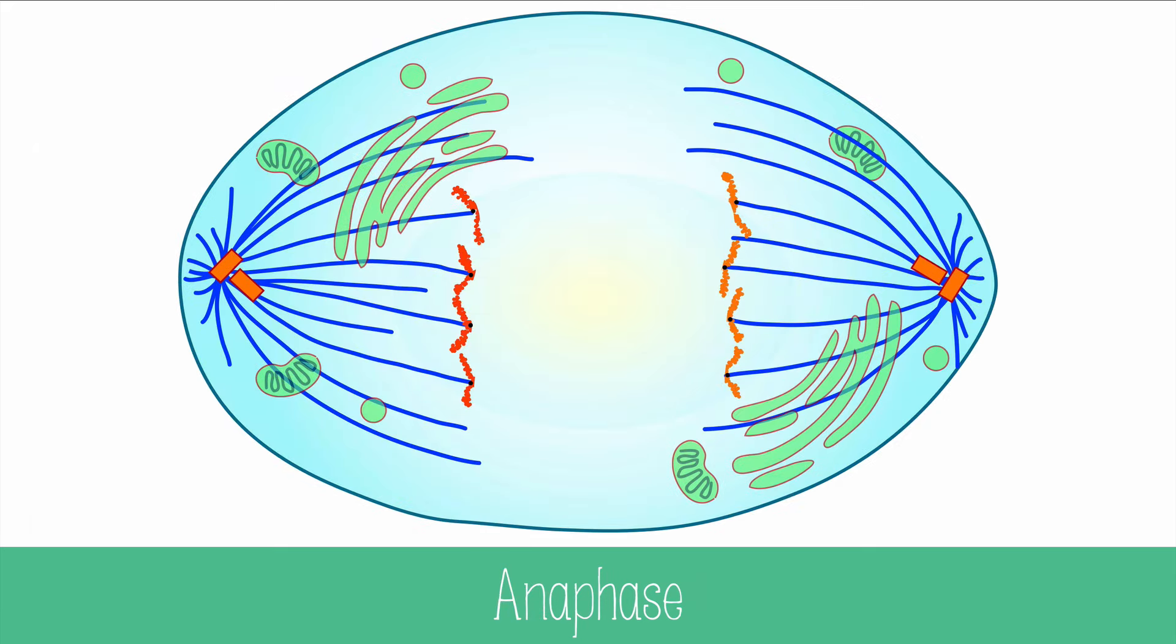In anaphase, chromatids of each chromosome separate at the centromere toward opposite ends. Each chromatid is now considered to be its own chromosome after it is separated.